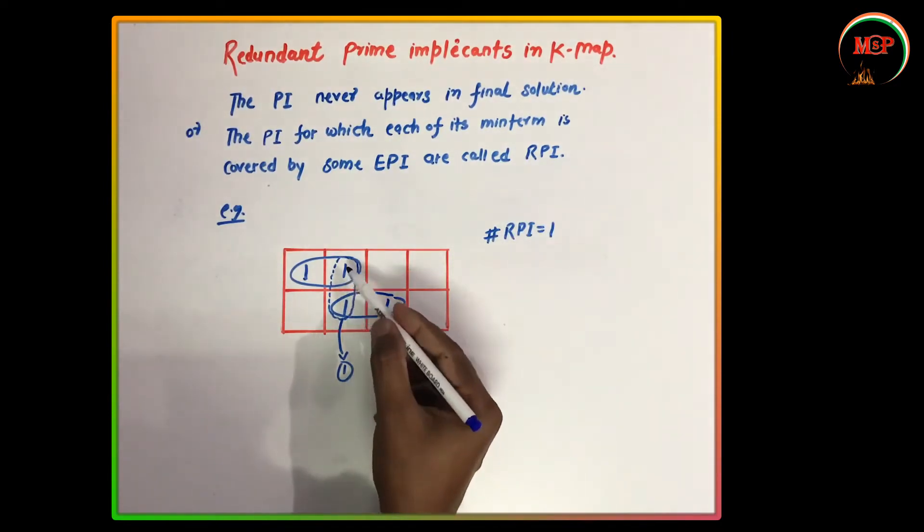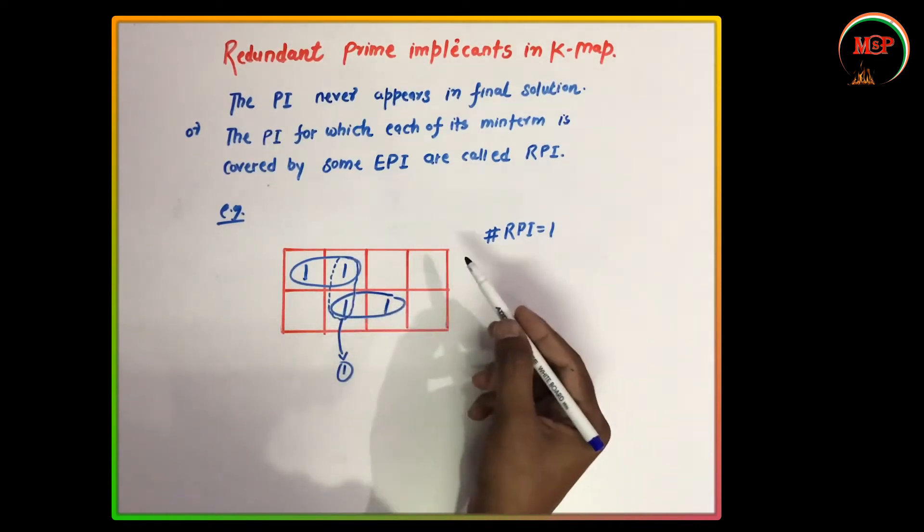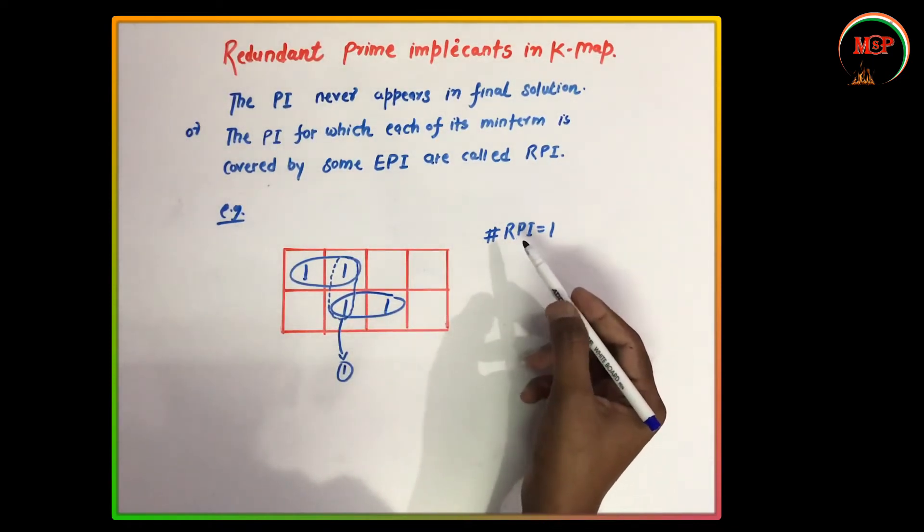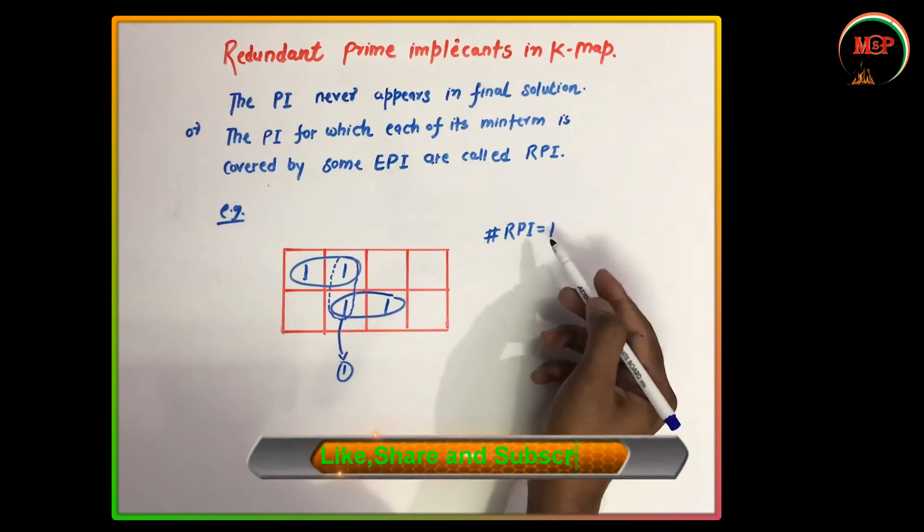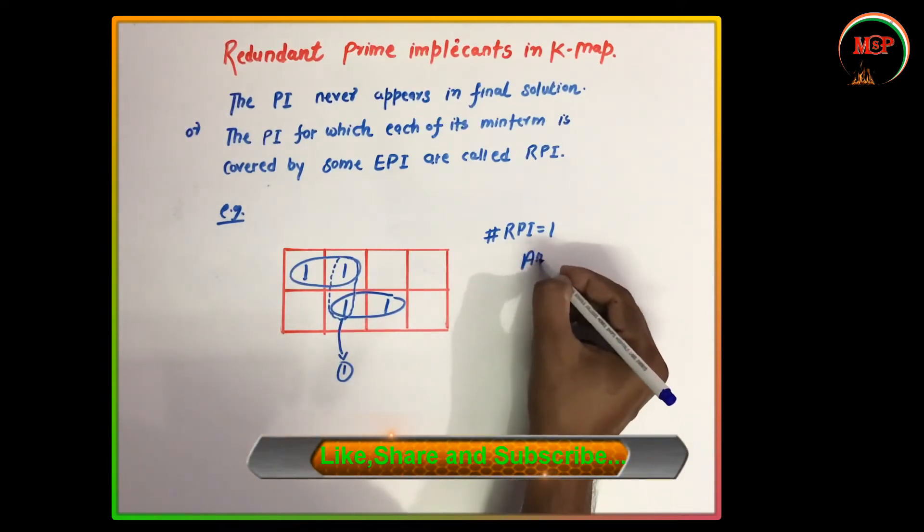Why is it 1? Because this pair does not exist in the solution. That is called redundant prime implicants. So this is the final answer.